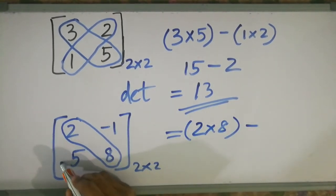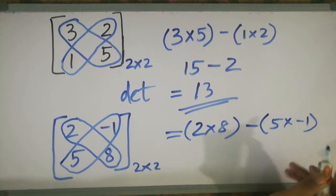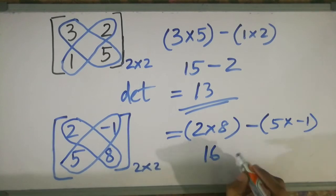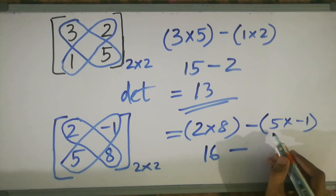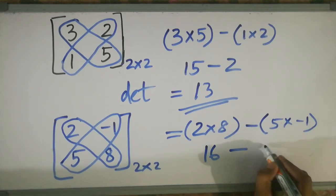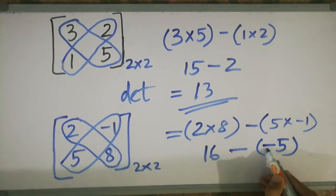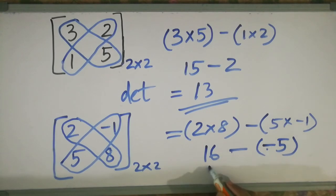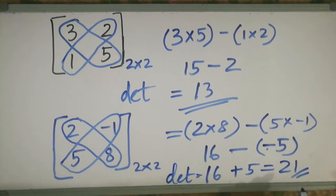5 minus minus 1. So plus 16 plus 5. 16 plus 5 = 21. So in this matrix, the determinant is 21. So this is the determinant. Thanks!